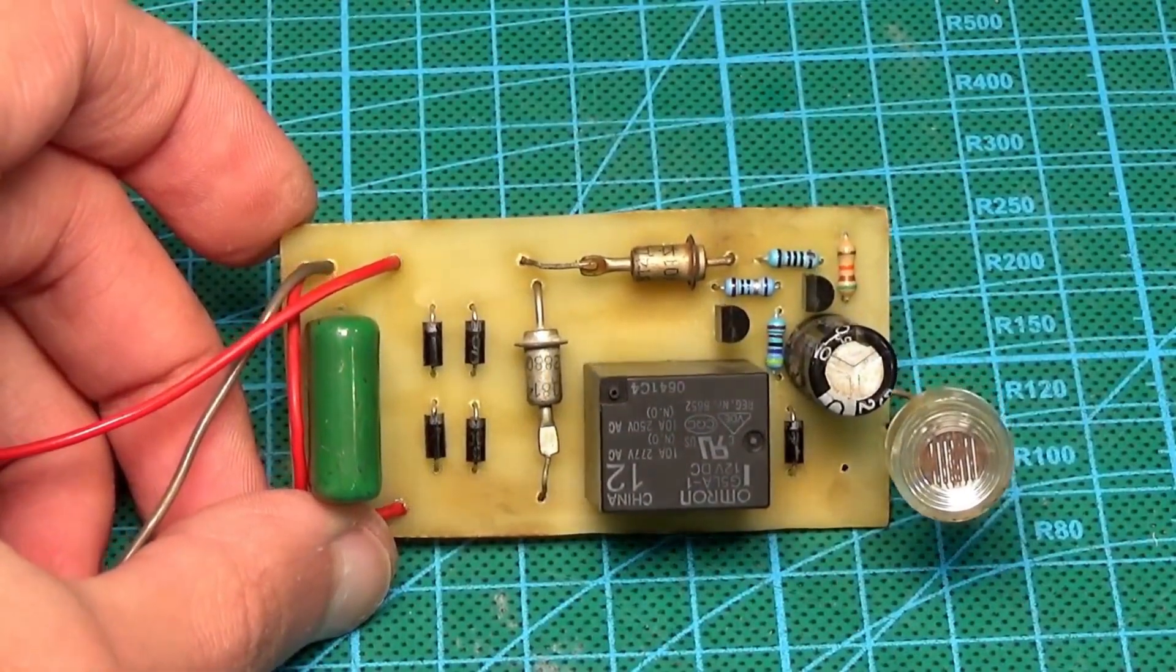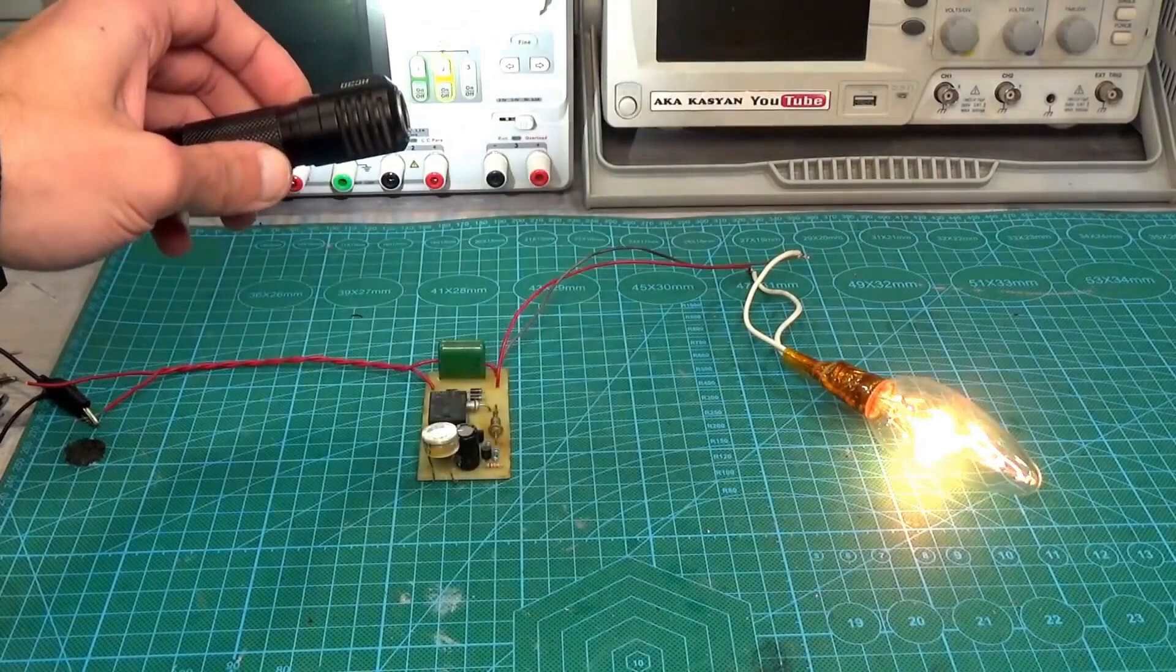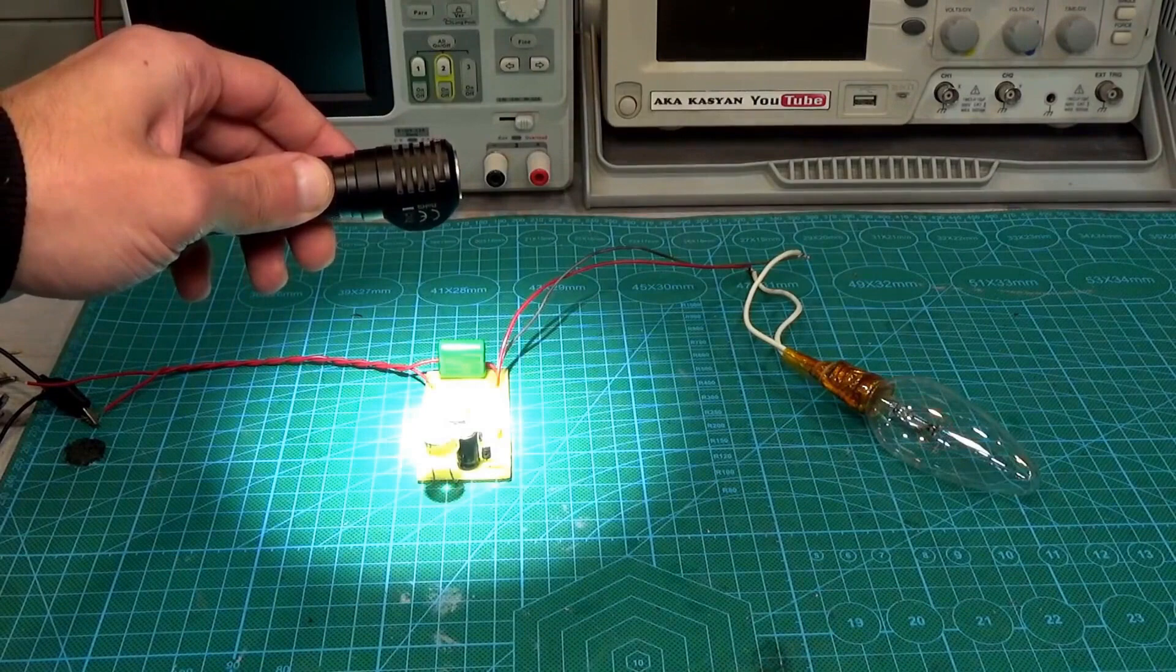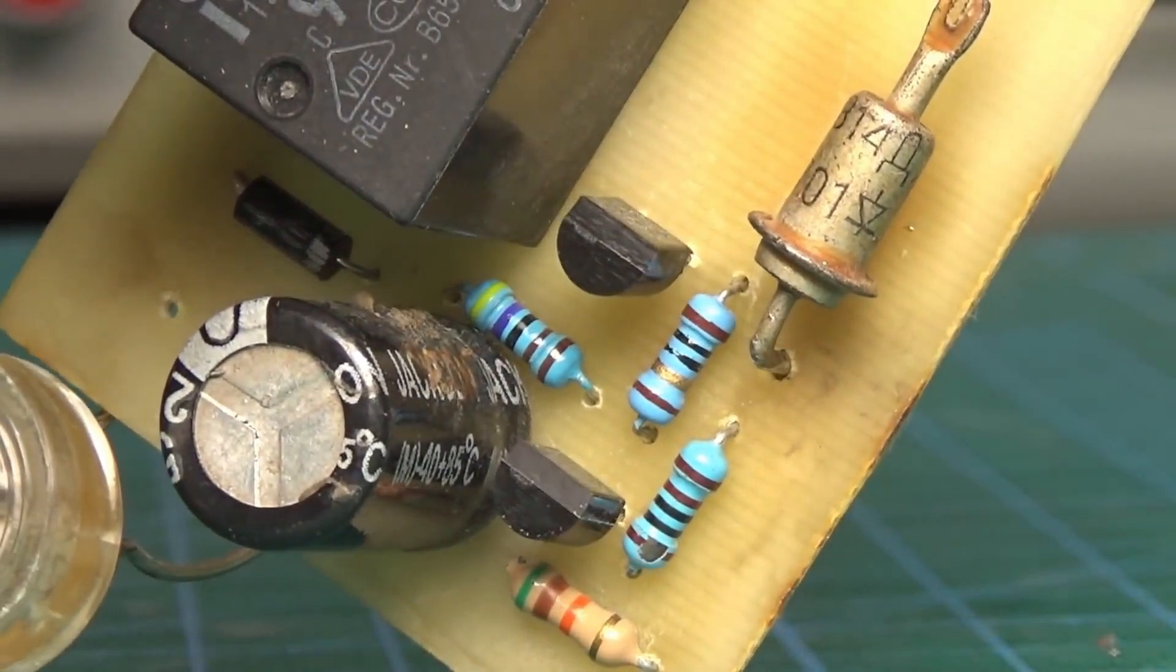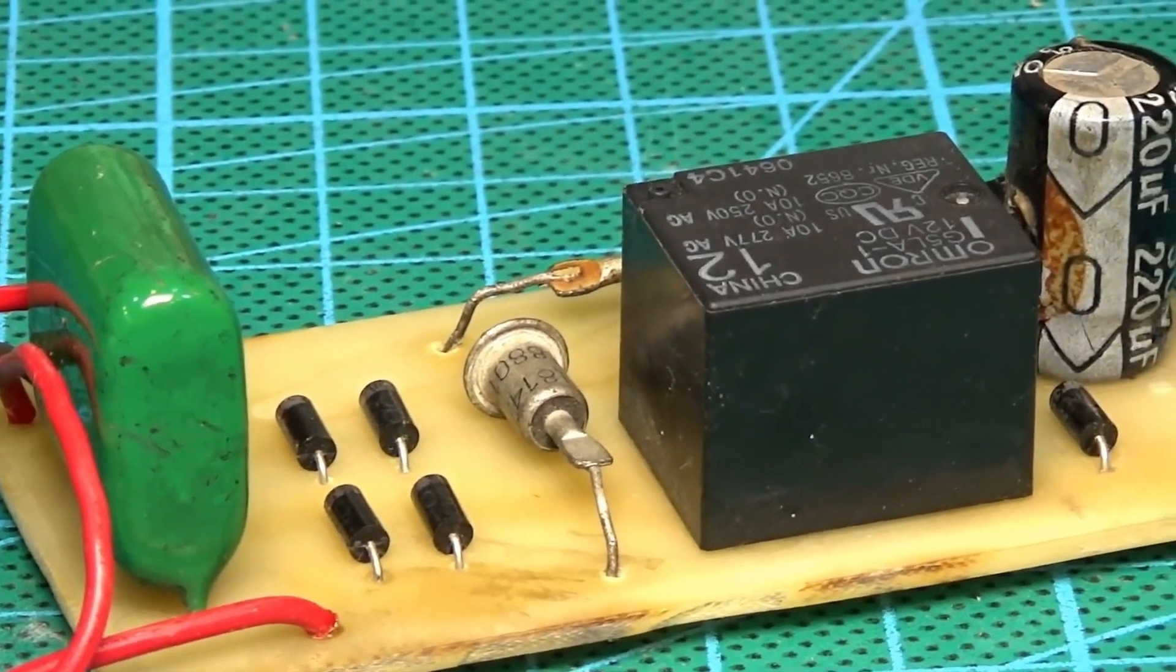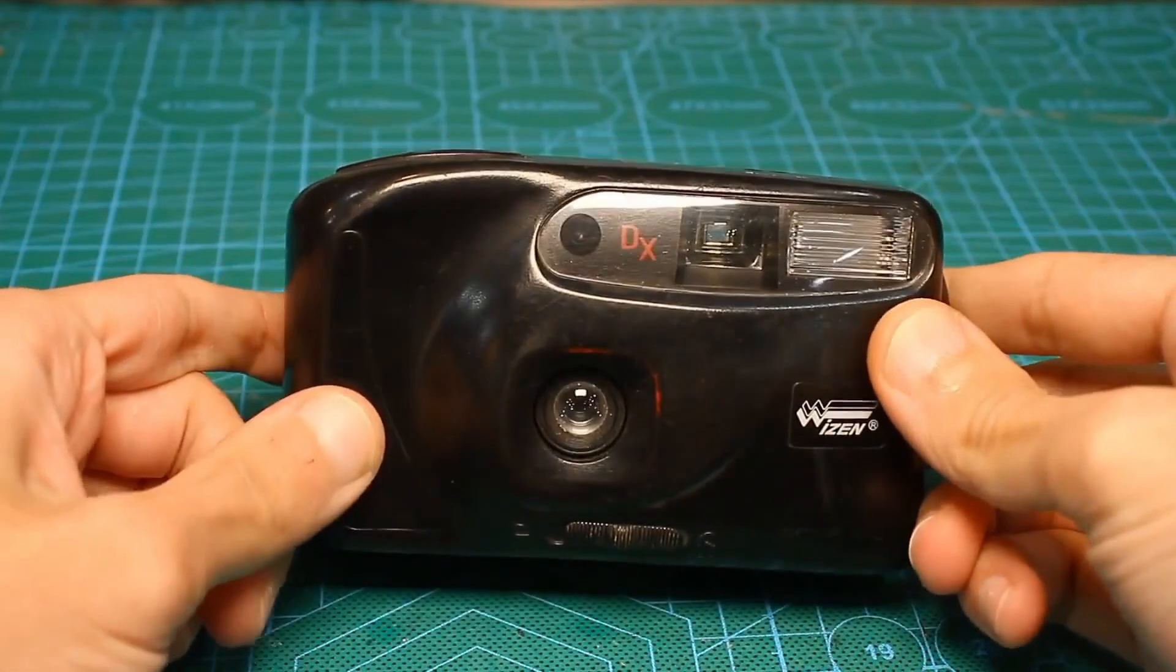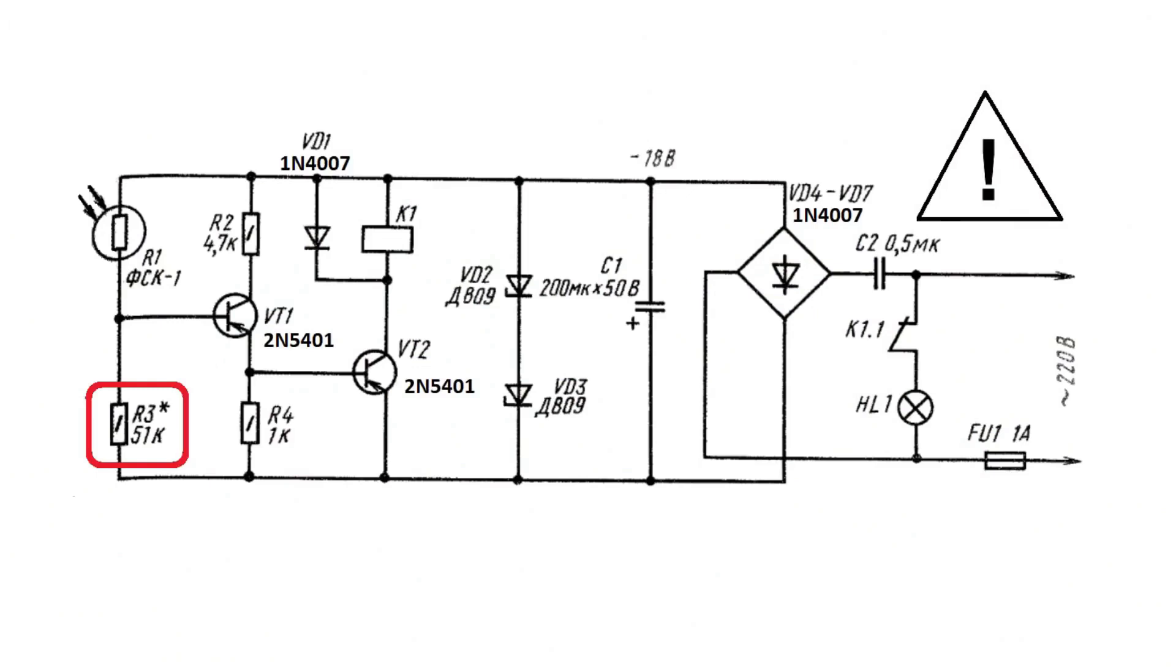The sensitivity of such a simple device can be adjusted by selecting the specified resistor, or replacing it with a variable one. This device successfully operates both on outdated germanium transistors of the MP type and on silicon ones. For example, you can use common transistors like the 2N5401, or any other low-power PNP structures. The power of the connected load depends on the relay's switching current. You can take a photoresistor, for example, from an old cheap film camera. Depending on the type of photoresistor, it may be necessary to select the specified resistor.